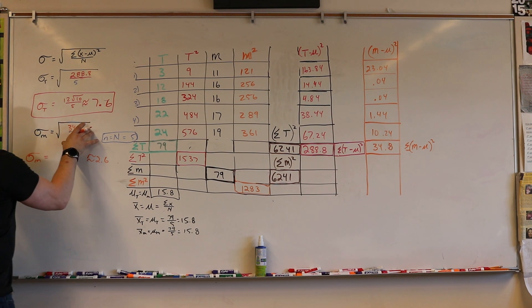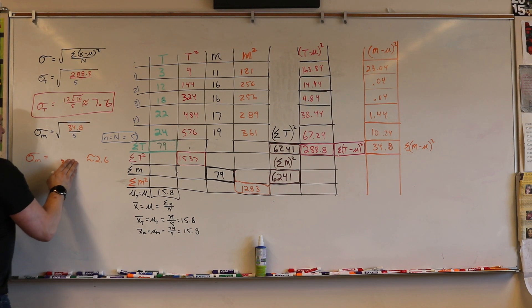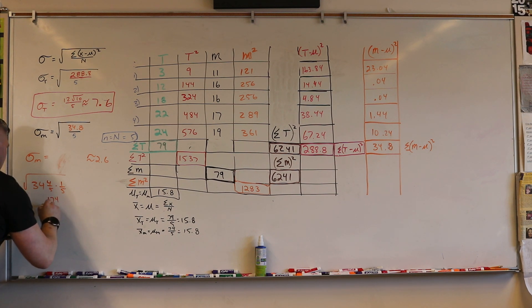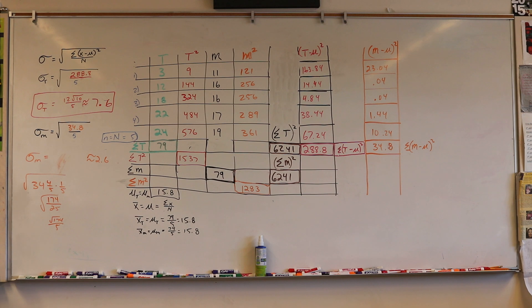So I had basically 34 and 0.8, which would be 8 tenths, so that would be 4 fifths, so 34 and 4 fifths over 5. So now I'm going to divide all of this by 5, which means I'm going to multiply by 1 fifth. When I take 5 times 34, 34 times 5 equals 170, so I get 174 over 25 square rooted. What that really is is the square root of 174 over 5, because 5 was squared.